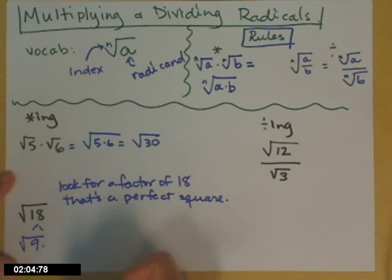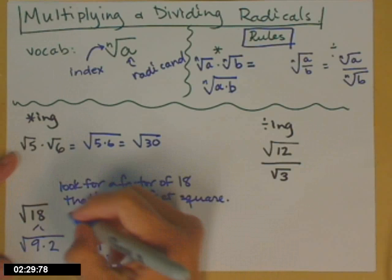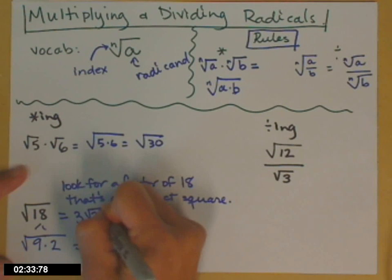9 goes into 18 nicely, and 9's a perfect square. So what I'm going to do is rewrite 18 as the square root of 9 times 2. That's legal. My multiplication rule says I can now split that up into two different radicals. Square root of 9 times square root of 2. And square root of 9, we all know, is 3. Square root of 2 we don't, so it stays square root of 2. So the square root of 18 simplifies to 3 times the square root of 2.